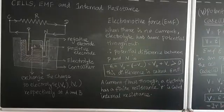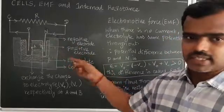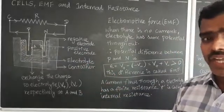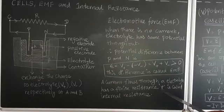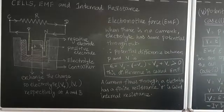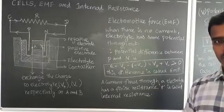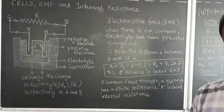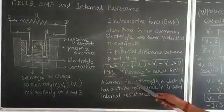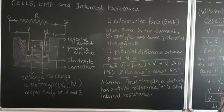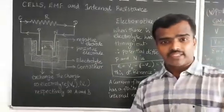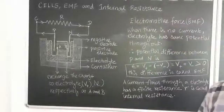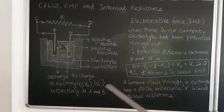When current flows through the electrolyte, the electrolyte has a finite resistance. Once the resistance R has a finite value, current will definitely flow through the electrolyte. That electrolyte has some minimum resistance, and that minimum resistance is called the internal resistance, denoted by small r. So to summarize: when the circuit is open, the potential difference between the positive and negative electrode gives the electromotive force — epsilon equals V-plus plus V-minus. When the circuit is closed and current flows through the electrolyte, the finite small resistance r is called internal resistance.